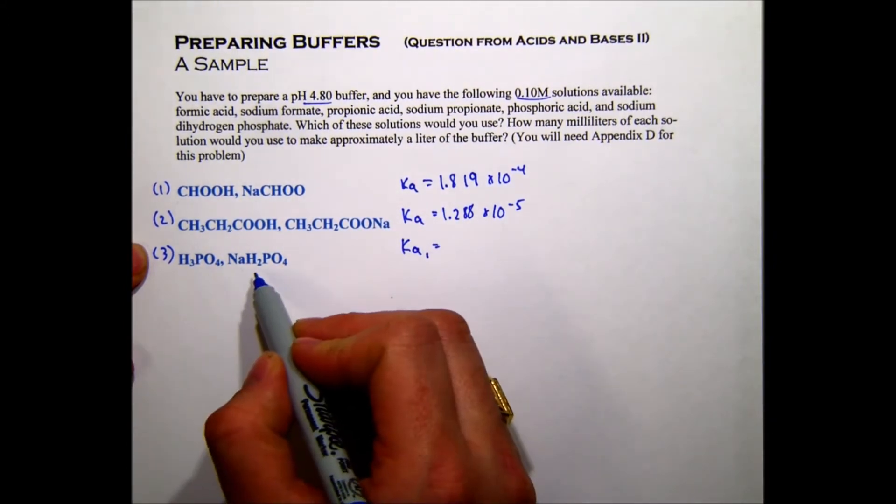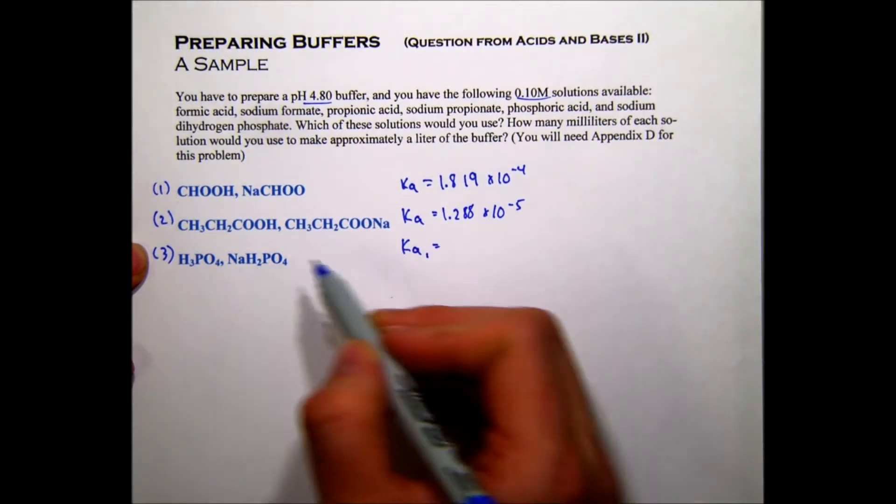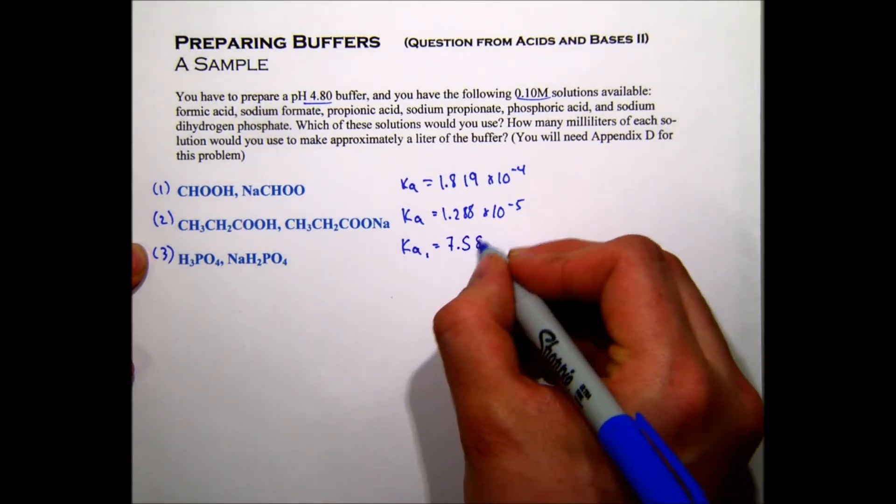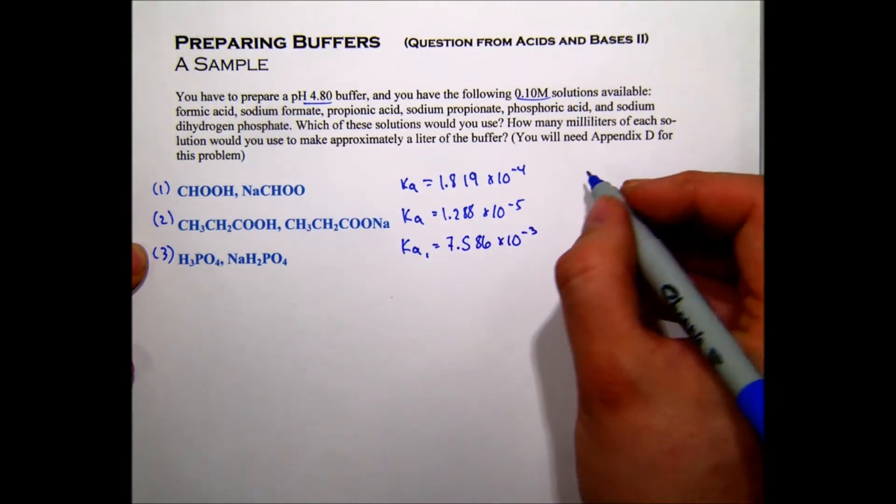And since phosphoric acid is a tri-protic acid, we're actually going to have to use Ka1. That's the first proton, so it's Ka1, and that's 7.586 times 10 to the negative 3.